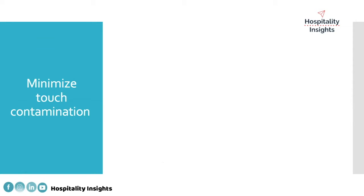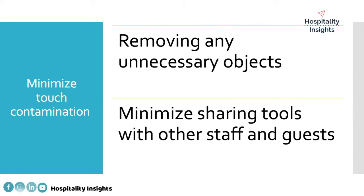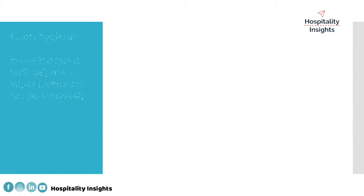The main objective is to minimize touch and contamination. Remove any unnecessary objects — you don't want fancy items in the lobby where customers and kids are touching everything. Don't have a lot of objects around the front desk and reception. Minimize the sharing of tools with other staff and guests. This requires a contactless journey affecting room service, housekeeping services, and F&B. The specific procedures will be discussed for each operational department.